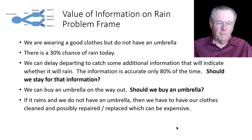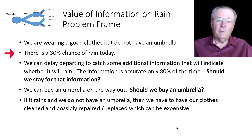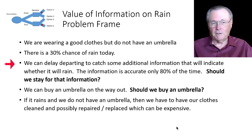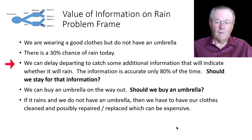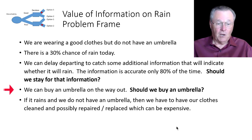I have a problem frame here where we're wearing some good clothes but do not have an umbrella, and there's a 30% chance of rain today. So we could delay our departure and catch some additional information that will indicate whether it will rain — we'll talk to a weather forecaster or something. The problem is that this information is only 80% accurate. So the question is, should we stay for that information and buy the information? There's a cost to that.